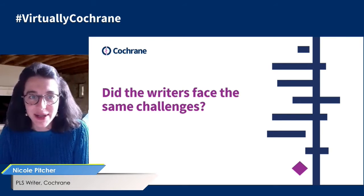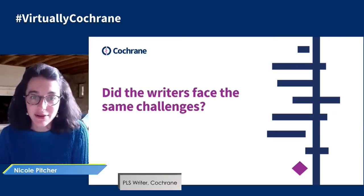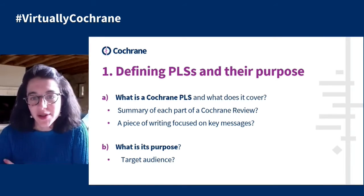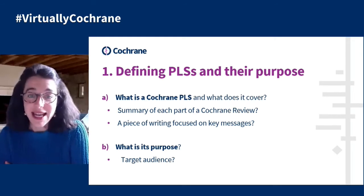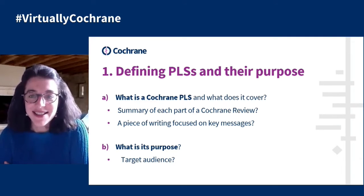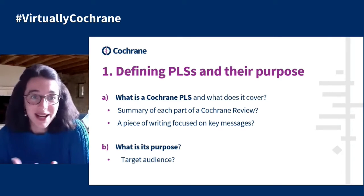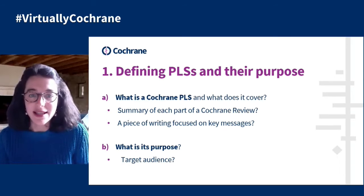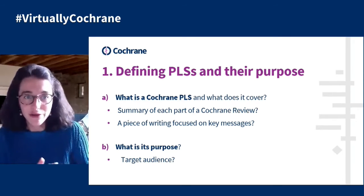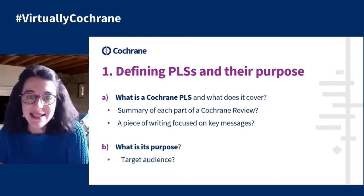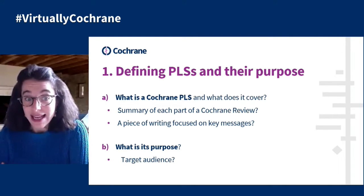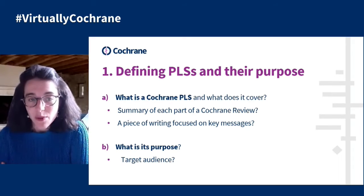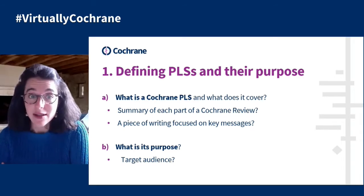For this presentation, we've highlighted three of the main challenges that we faced as writers and how we tackled these. The first one was actually defining what PLSs should cover and what their purpose was. It might seem like quite an easy question to answer. At the start of the project, it was clear that some people might view summaries as encompassing each of the main parts of the Cochrane review — from the background through to implications — whilst others were quite keen for it to focus on the key messages of the review. It was also important to gauge who we were writing for, so that we could tailor the PLSs appropriately.